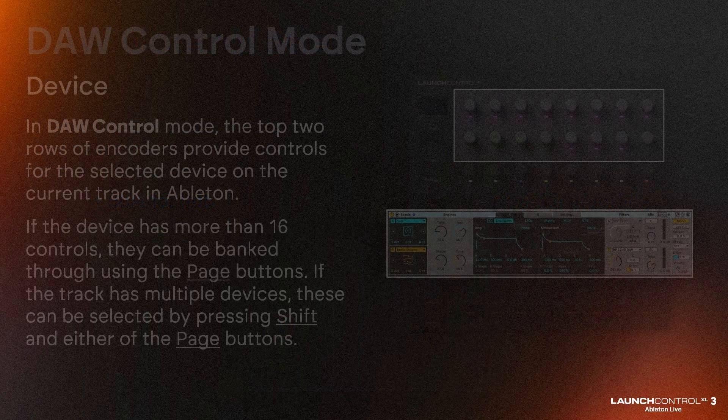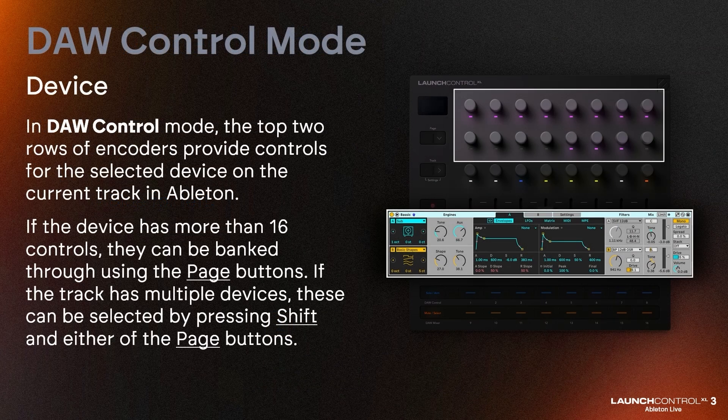In DAW Control mode, the top two rows of encoders provide controls for the selected device on the current track in Ableton. If the device has more than 16 controls, they can be banked through using the page buttons.